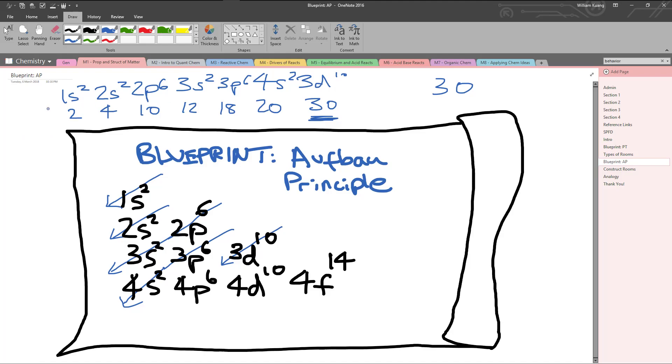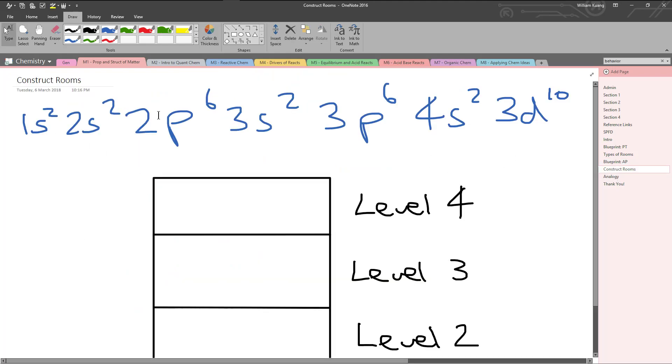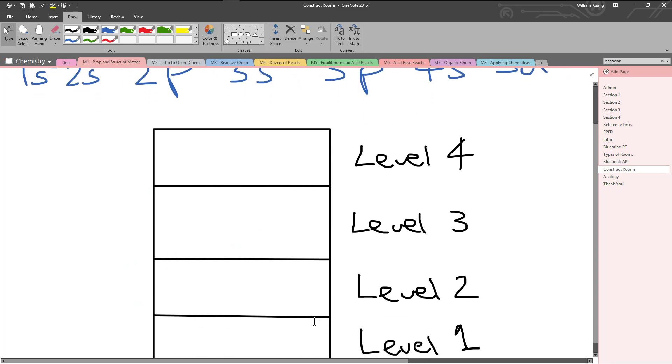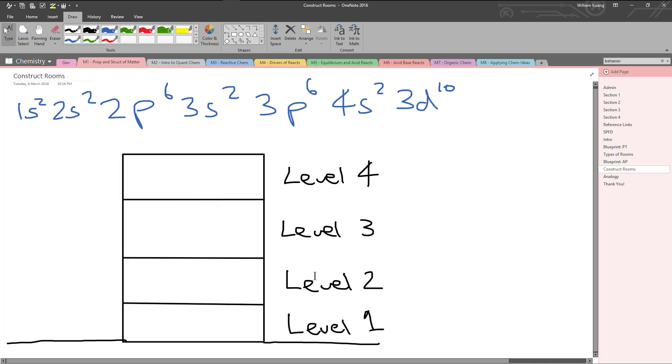So what do we do? This actually tells you the SPDF notation for zinc. You're actually already done. But what we're going to do is actually build our zinc hotel. So let's construct the rooms. This is the answer we had before, and this is the levels of the rooms we saw. Let's complete this analogy.